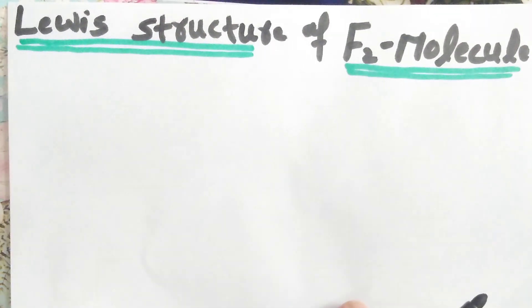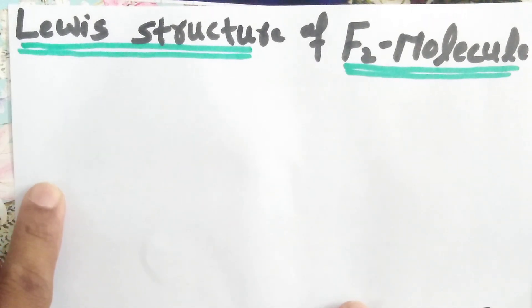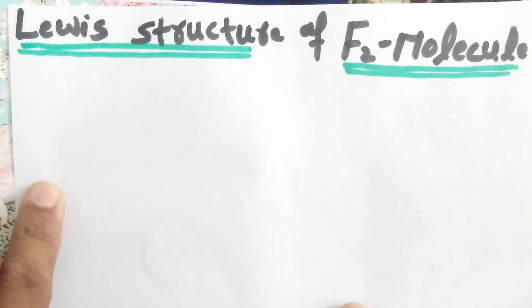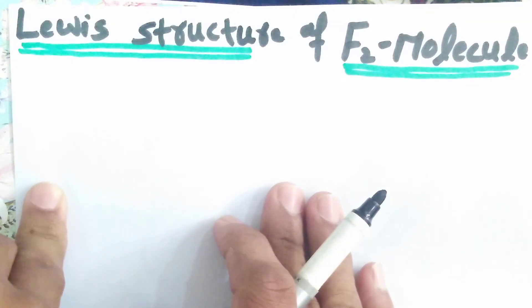Assalamu alaikum students. Today we are going to draw the Lewis structure of F2 molecule. To draw the Lewis structure of F2 molecule, first of all we have to calculate valence electrons in each fluorine atom.